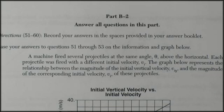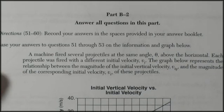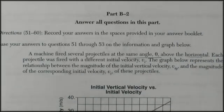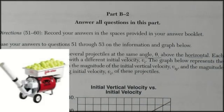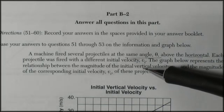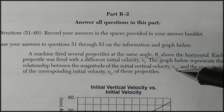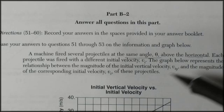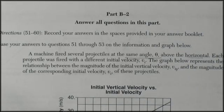Questions 51 through 53 are based on this. A machine fired several projectiles at the same angle above the horizontal. The graph represents the relationship between the magnitude of the initial vertical velocity on the y-axis and the magnitude of the corresponding velocity from the machine.